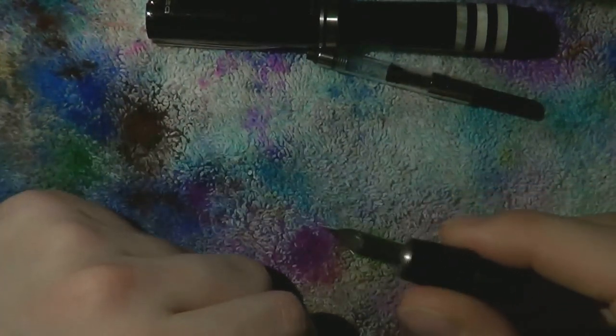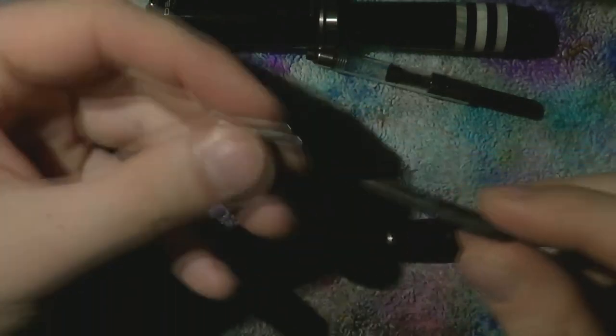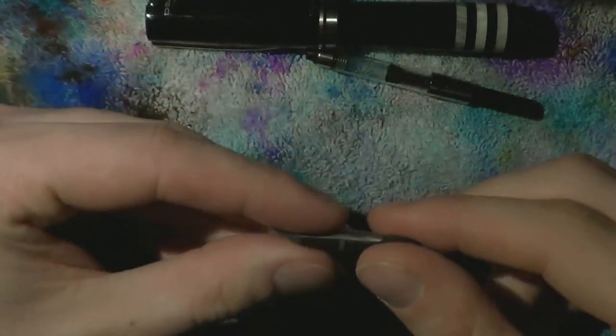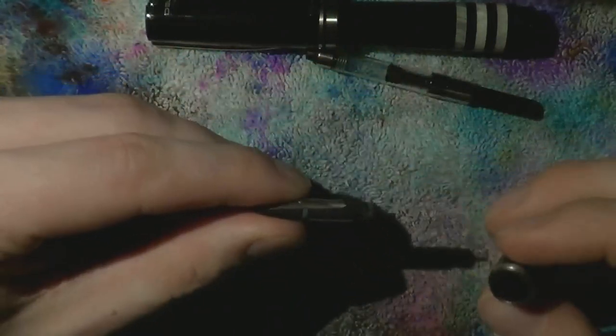When it comes to the section, nib and feed, a friction fit. Just pull them out. Clean them well. But be careful. You don't flush them down the sink. It would be a pity.